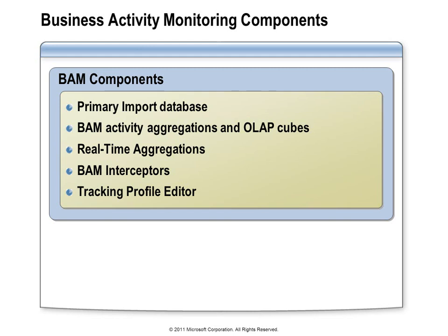There are pre-built BAM interceptors that know how to collect data from pipelines and orchestrations. You can use the Tracking Profile Editor to configure those interceptors to collect specific data values at specific points in the business process. There are two other interceptors as well — one can be configured to collect data from a Windows Workflow application, and the other can collect data from a WCF service. Understanding this set of components gives you enough information to start applying BAM to your applications.